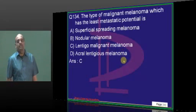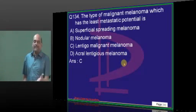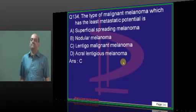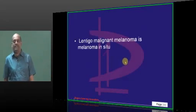Lentigo maligna melanoma — in fact, it is called melanoma in situ — that is the name given for it.